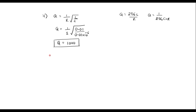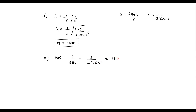Now let us calculate bandwidth. Bandwidth is calculated using the formula R divided by 2 pi L. With R equal to 1 and L equal to 0.01, solving gives a bandwidth of 15.915 hertz.